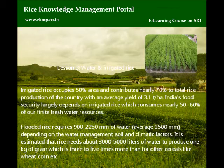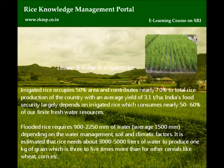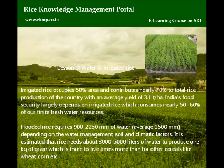Lesson 3: Water and Irrigated Rice. Irrigated rice occupies 50% of the area and contributes nearly 70% to total rice production of the country, with an average yield of 3.1 tons per hectare. India's food security largely depends on irrigated rice, which consumes nearly 50-60% of our finite freshwater resources. Flooded rice requires 900 to 2,250 millimeters of water — average 1,500 millimeters — depending on water management, soil and climatic factors.